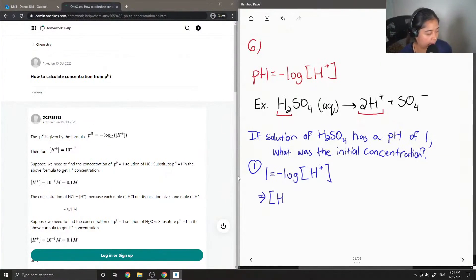So, in order to get rid of the log, we are going to do 10 to the power of negative pH. So, if we plug this in as 1, then we get an H+ concentration of 0.1 molar.